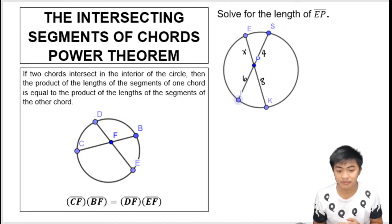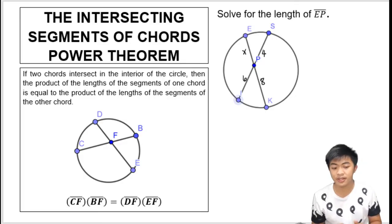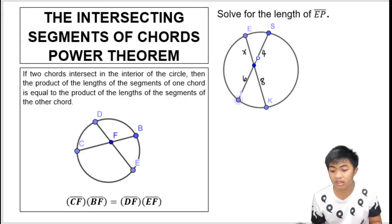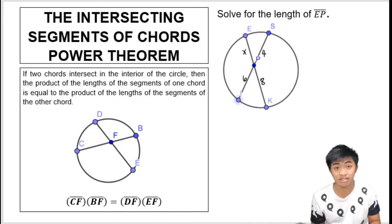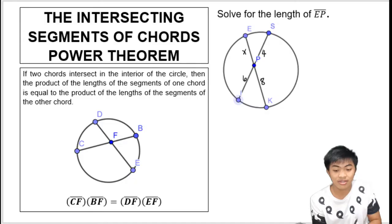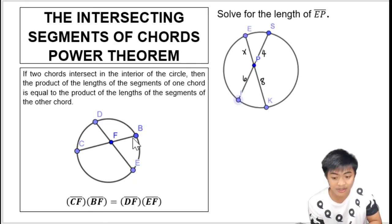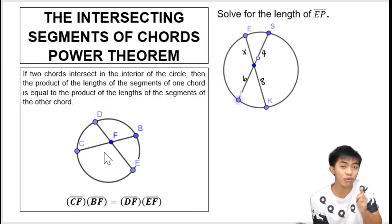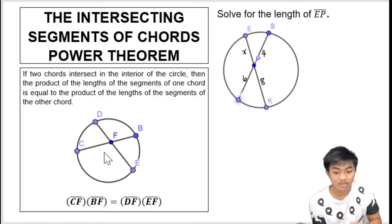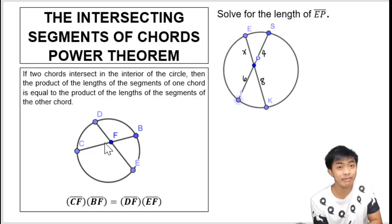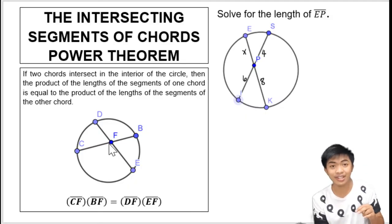It says that if two chords intersect in the interior of the circle, then the product of the lengths of the segments of one chord is equal to the product of the lengths of the segments of the other. So, there are two chords, and because of the intersection, the chords are cut into two. So if one of them is unknown, we can solve for it, as long as the other parts are given.